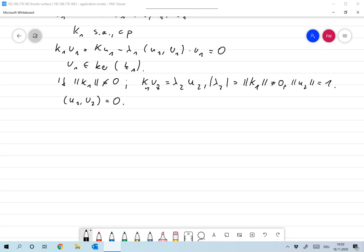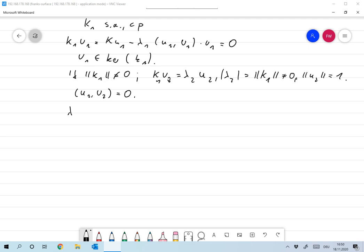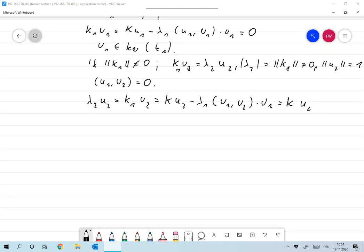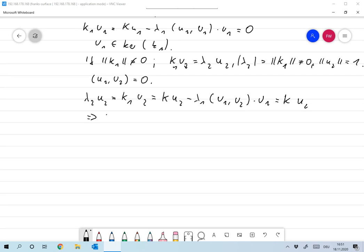Now since they're orthogonal, we have that λ₂u₂ is the same as k₁ applied to u₂. That's k applied to u₂ minus λ₁ times the scalar product of u₁ and u₂ times u₁, but this is 0, so this is k times u₂. And we find that u₂ is an eigenvector of k with respect to λ₂.